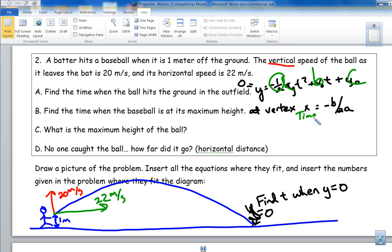What is the maximum height of the ball? Plug that time into the vertical height equation: y equals negative one half ag t squared plus v naught t plus y naught.